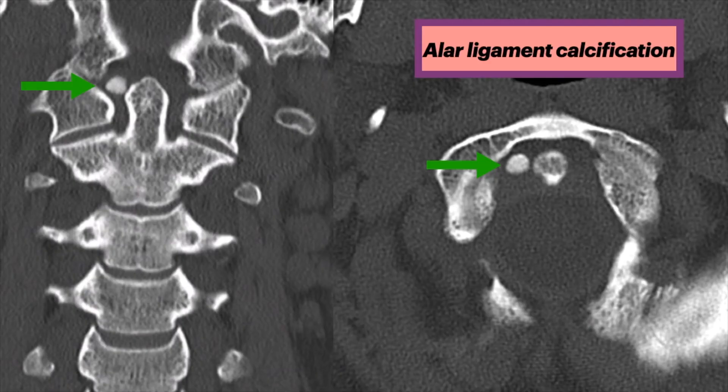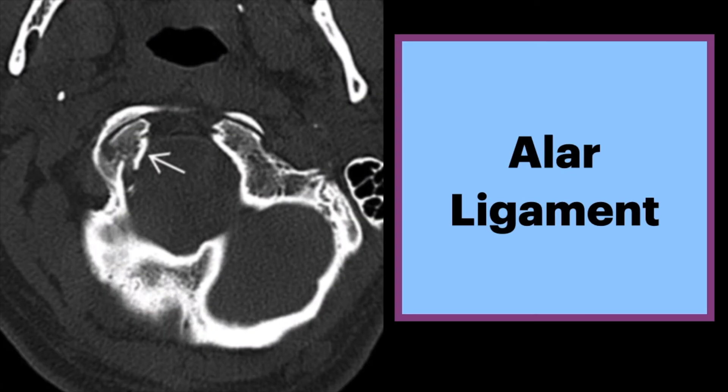As part of the differential are alar ligament calcifications. These are rare, and the components of the calcification may be calcium pyrophosphate dihydrate or calcium hydroxyapatite. Now you know a lot about the alar ligament.